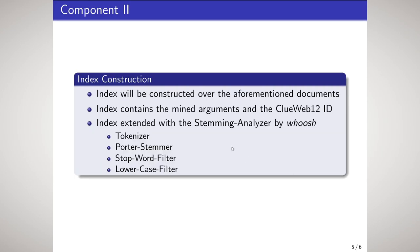The second component is responsible for constructing the index. To accomplish this task, I have chosen the Python library VOOSH. The index will be constructed over the aforementioned documents and will contain the mined arguments and also the ClueWeb12 ID. The index is then extended with the stemming analyzer provided by VOOSH, which contains a tokenizer, a Porter stemmer, a stopword filter, and a lowercase filter.